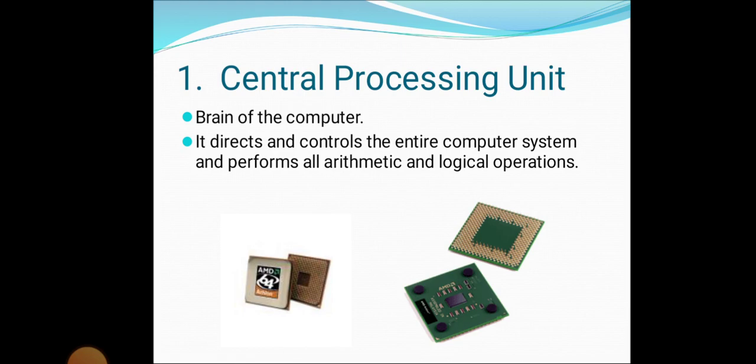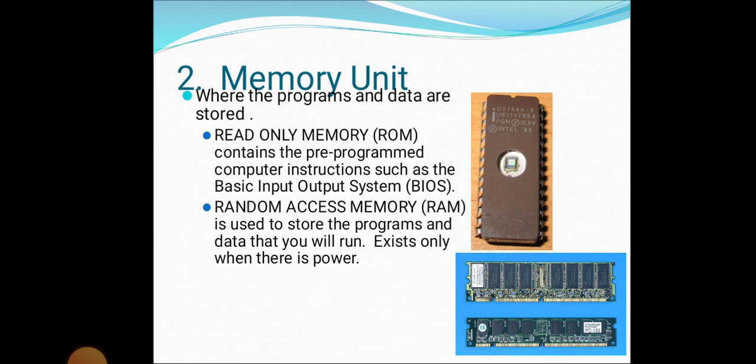Memory unit consists of RAM and ROM: read-only memory and random access memory. ROM contains pre-programmed computer instructions such as the basic input and output system. Random access memory is used to store the programs and data that you will run on the computer.